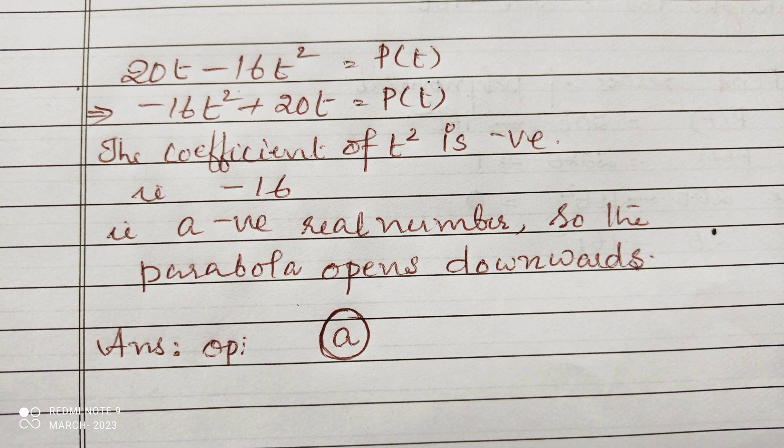Since 20t - 16t² = p(t), we are taking t² to the first. Then -16t² + 20t = p(t). The coefficient of t² in this equation is a negative number, that is -16.